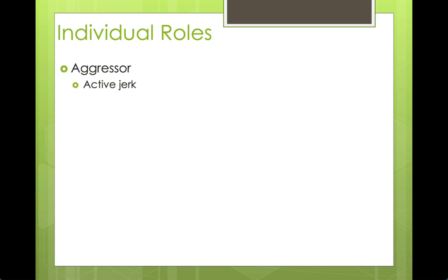Now let's talk about individual roles — super fun to talk about, terrible to have on a team. You can have an aggressor. This is someone who's just a jerk. You don't know why they have a burr underneath their saddle, but they've got something up their crawl. It doesn't matter what the topic is — they're going to have something mean to say about it, whether it's mean to other team members, people in the organization, or a different team they've been on.